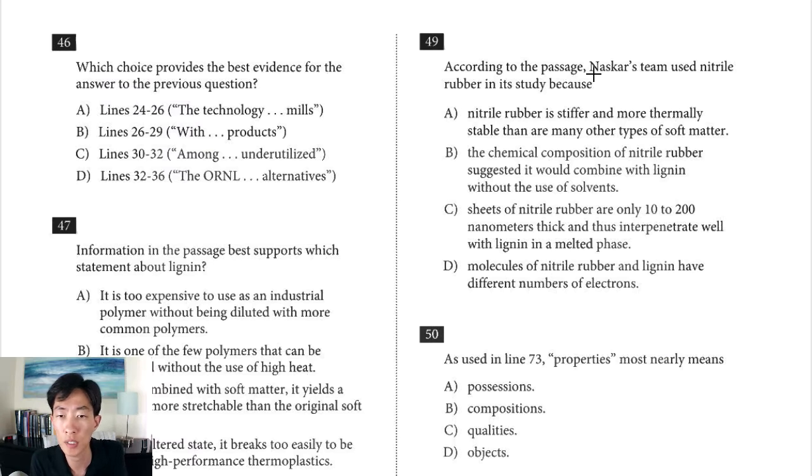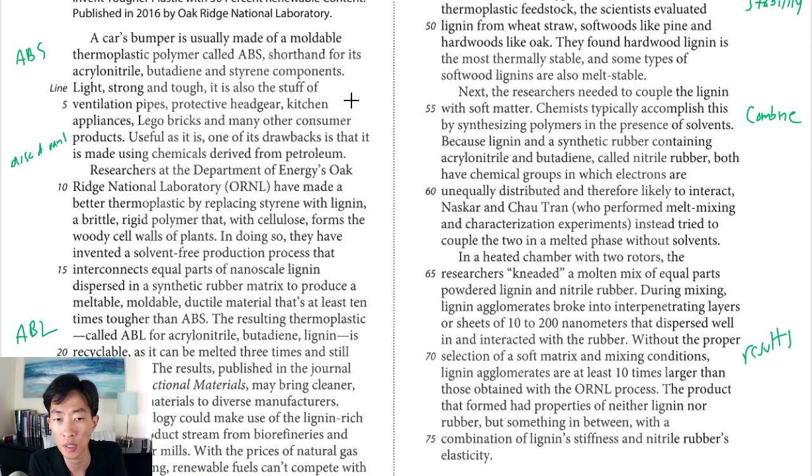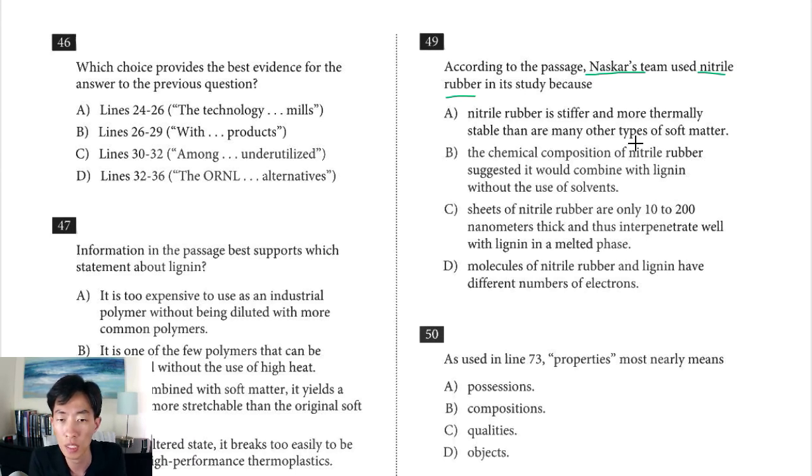Question 49. According to the passage, Naskar's team used nitrile rubber in the study because... Now if you remember, nitrile rubber was mentioned as the material that they used to combine with the lignin. So let's start in line 57 because lignin and synthetic rubber containing blah blah blah, called nitrile rubber, both have chemical groups in which electrons are unequally distributed and therefore likely to interact. Naskar and Chow Tran, who performed melt mixing and characterization experiments, instead tried to couple the two in a melted phase without solvents. It seems like the advantage of using nitrile rubber, this material was one, they're going to interact well, and two, they could combine them without using solvents. A, nitrile rubber is stiffer and more thermally stable than many other types of soft matter. It doesn't say that at all, so not going to work. B, the chemical composition of nitrile rubber suggested it would combine with lignin without the use of solvents. Yes, definitely. That's what we just read.